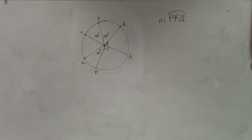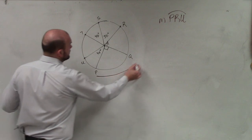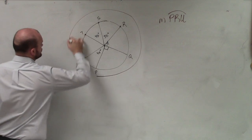On this question, they're asking us to find the arc. What we need to look at is where we're starting. I want to find the measure of this arc, P to R to U.